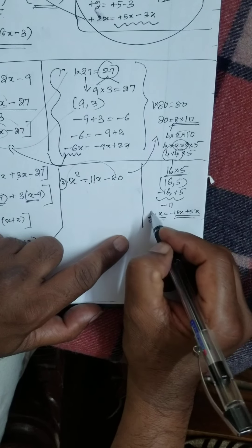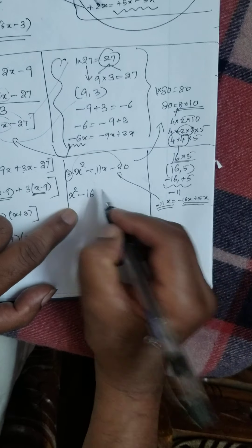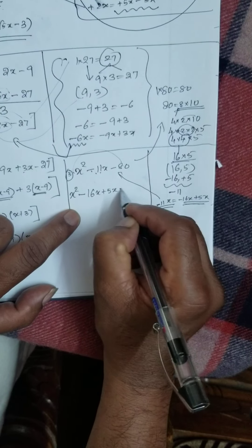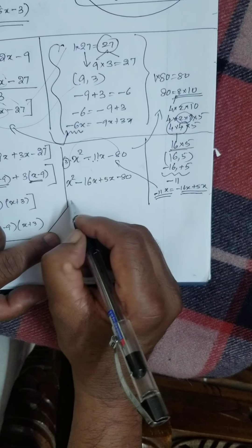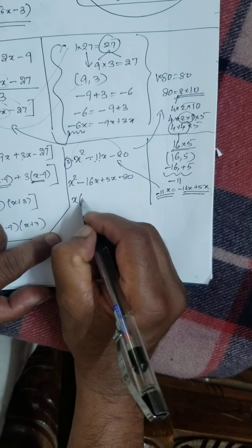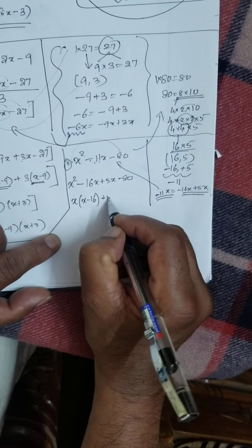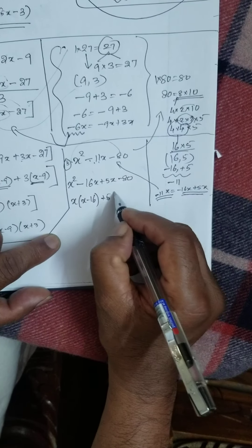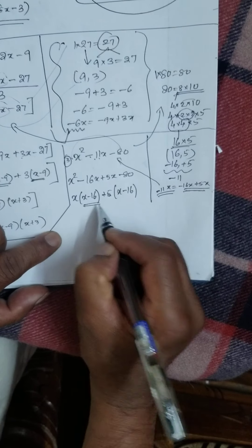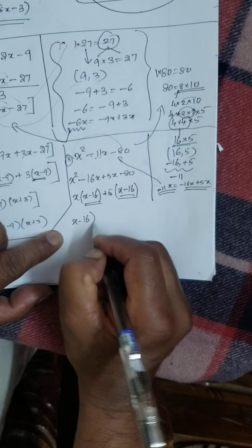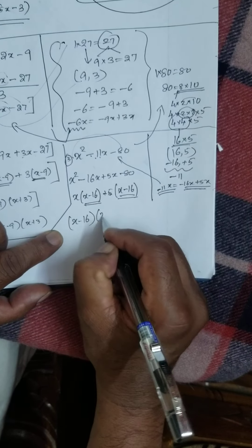Therefore I am going to put it here: x² minus 11x can be written as minus 16x plus 5x minus 80. Now x is the common factor: x(x minus 16). Here 5 is the common factor — x minus 16 again. Therefore: (x minus 16)(x plus 5). Okay.